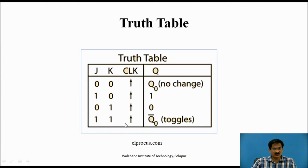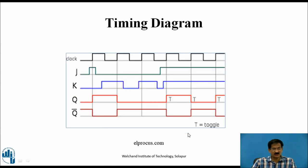When J equals 1, K equals 1, output will toggle, that is Q-bar. It means that for every clock pulse, the output will change between 1, 0, 1, 0, 1, 0. So this is the difference.